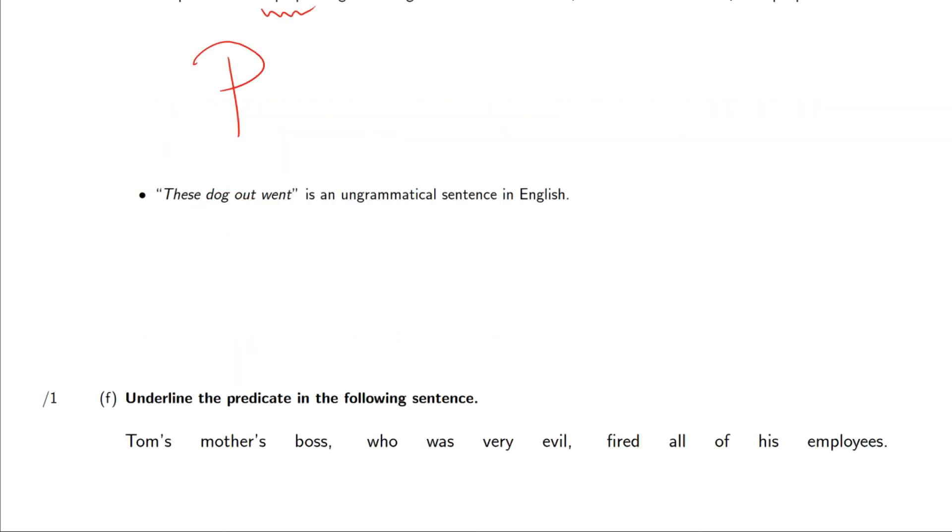These dog out went is an ungrammatical sentence in English. This is just a descriptive statement and we can say it's descriptive because ungrammatical is not a subjective word. Any speaker of English out there, these dog out went, will know it's ungrammatical because went out is a phrasal verb that has to be in a certain order or you could consider it to be a verb and an adverb and it's a more restricted adverb of where it could be. Either way you look at it, these dog out went sounds very weird to people who have been speaking English their entire life.